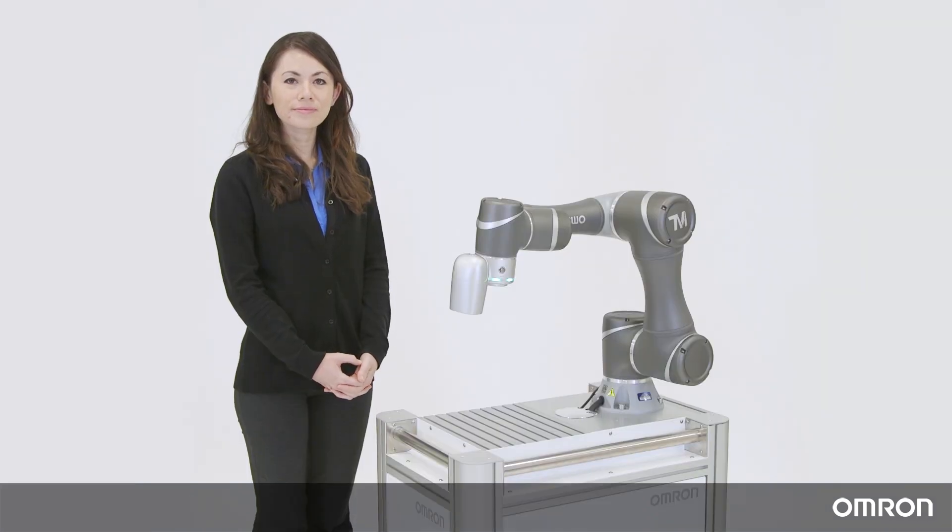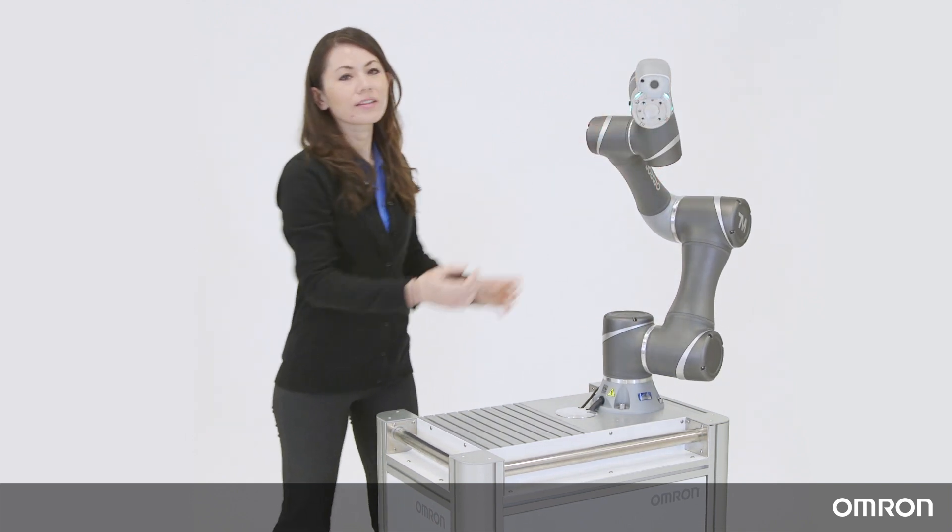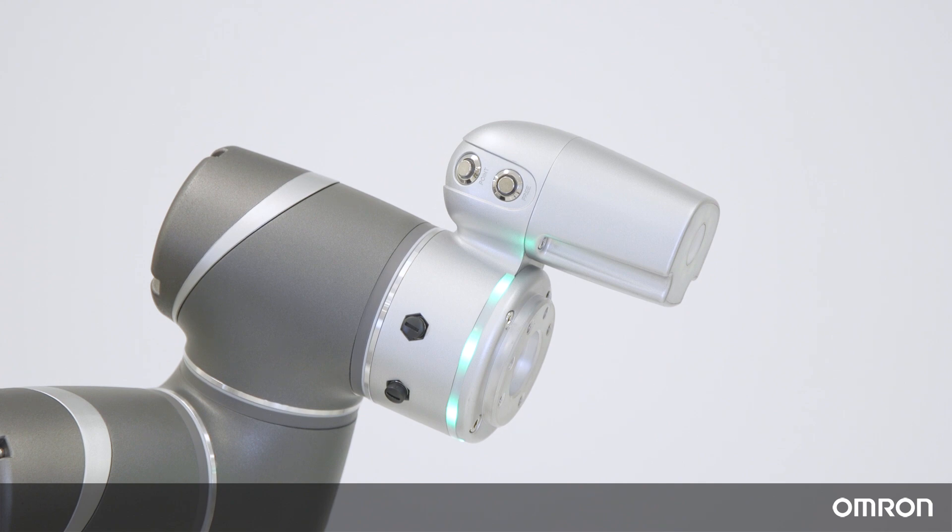Let's teach the cobot a movement. Press the Free button and move the cobot to a position. Release the Free button and then press the button next to it. This button is called the Point button. When you press the Point button, the cobot will remember that location and create a point, which will automatically be stored in the controller.